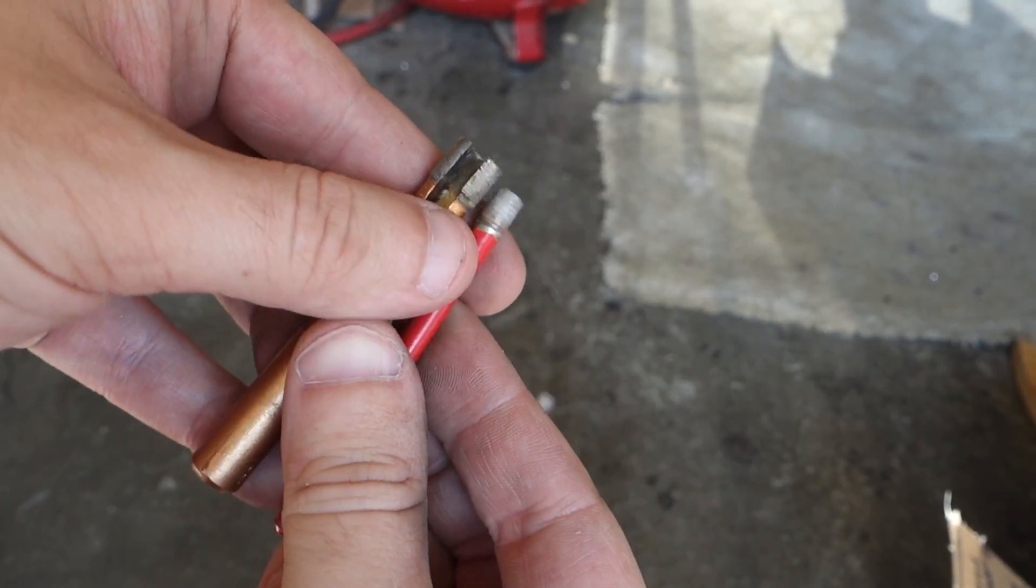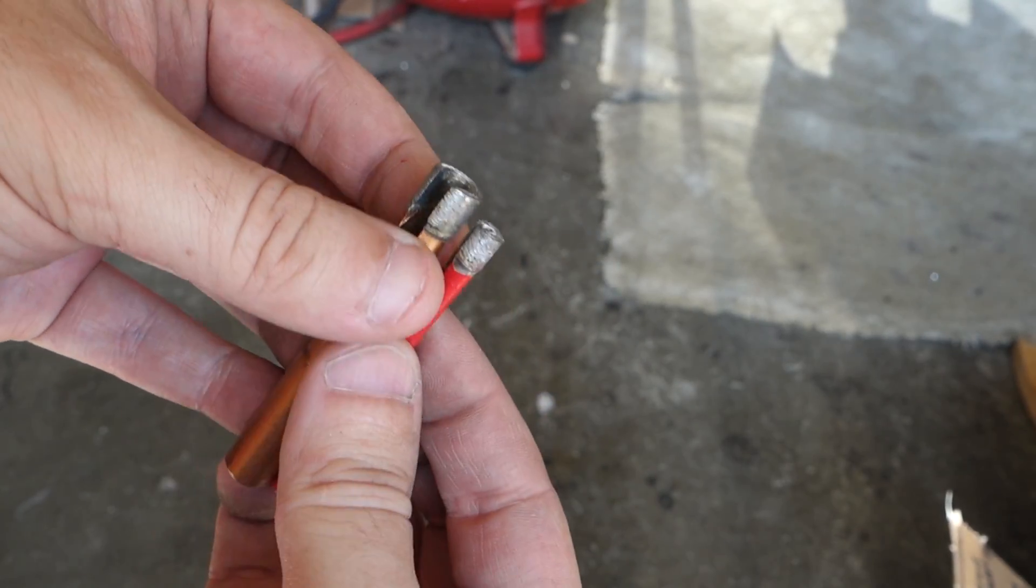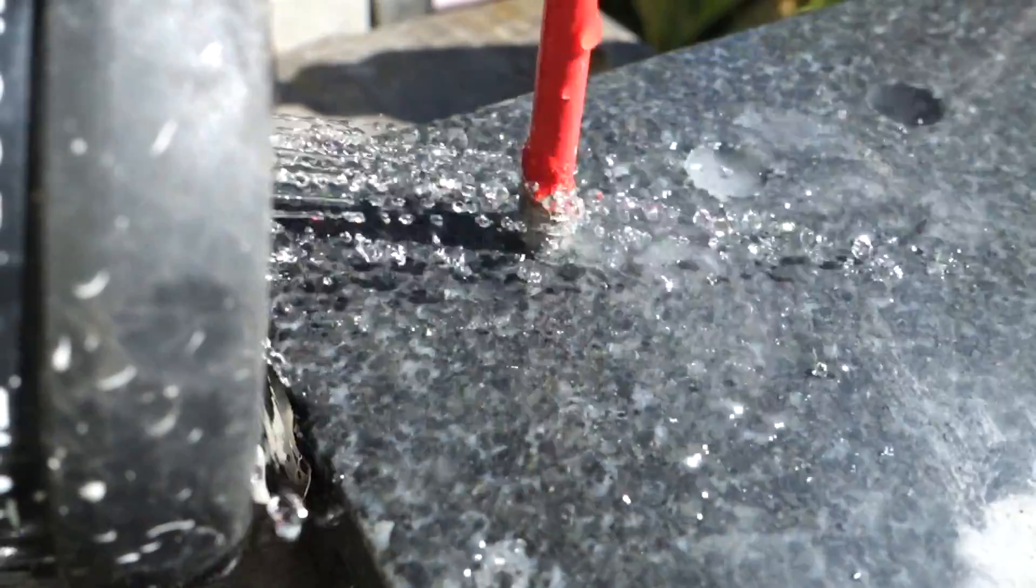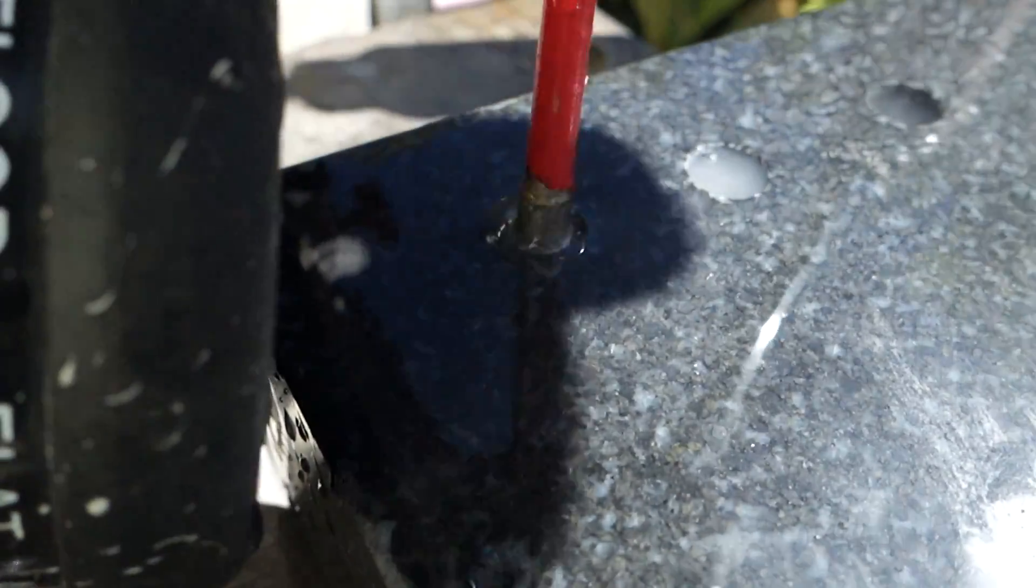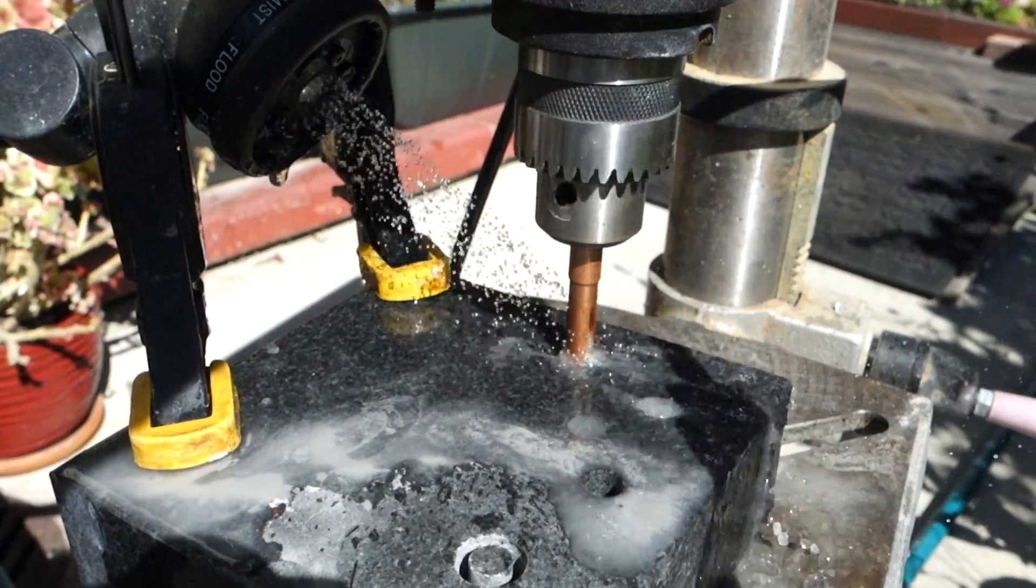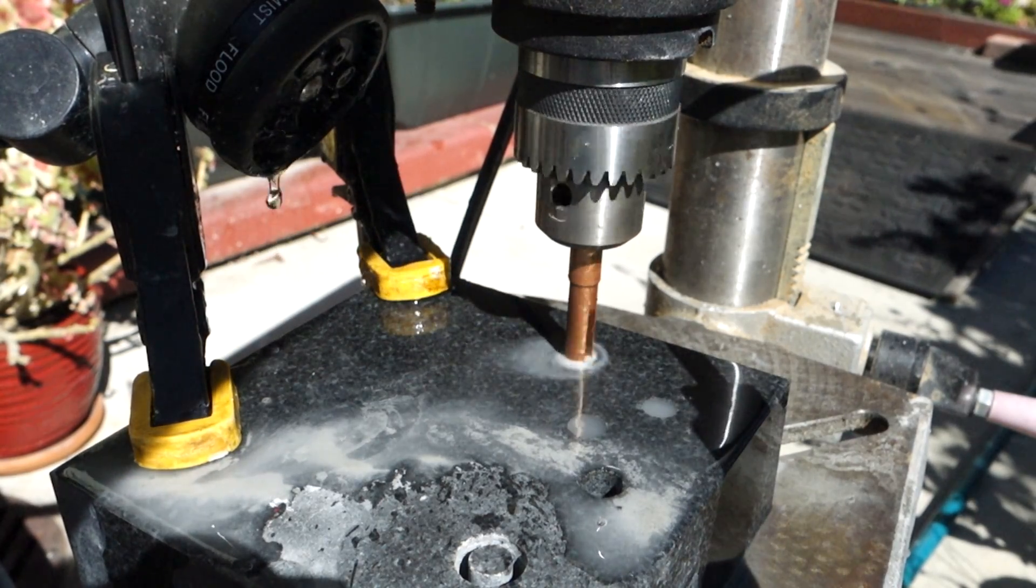For drilling, I got these cheap diamond core drills off Amazon. Despite them being core drills, I found it easier to plunge out the middle with the smallest one and step up, rather than leaving the core and trying to break it off since we're not drilling all the way through.